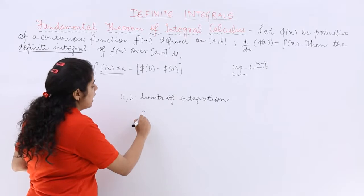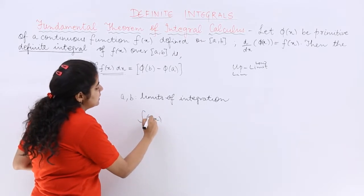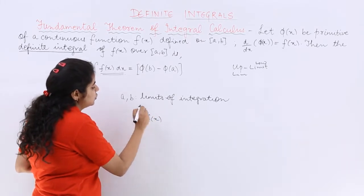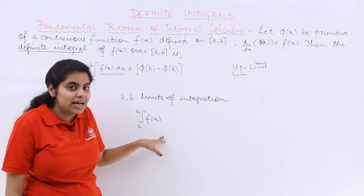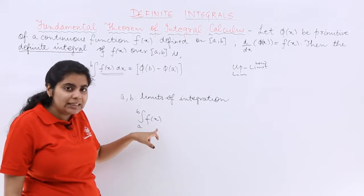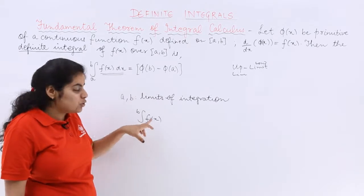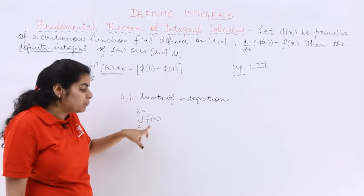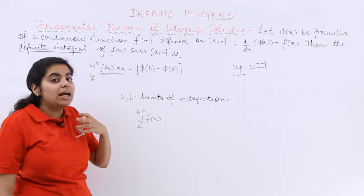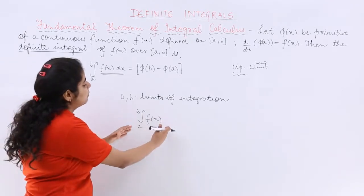So I say that if I have something over here as suppose this expression is written in front of you, what to read it as? Integration of, or integral of, f(x) over these limits. So integration of f(x) from a to b. But how to evaluate it? Upper limit minus lower limit.